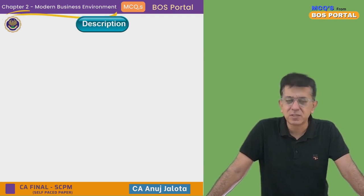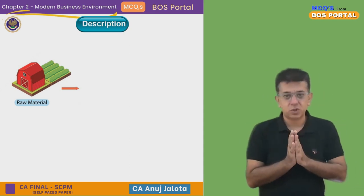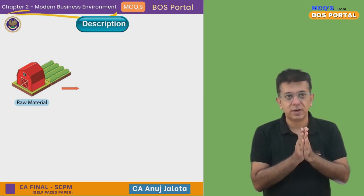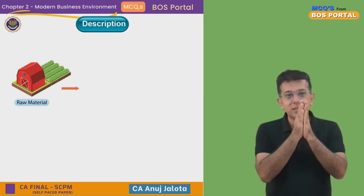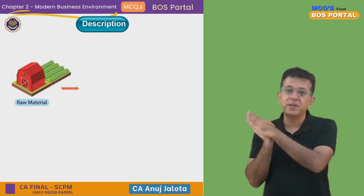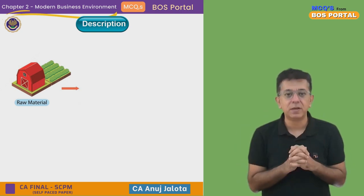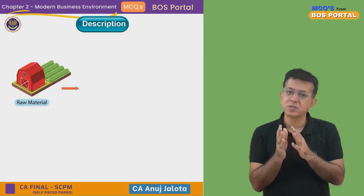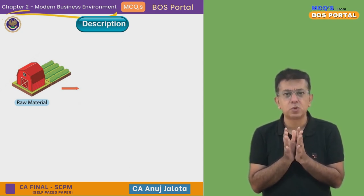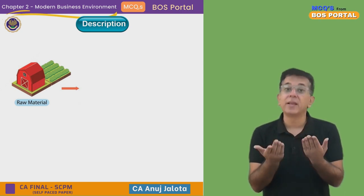Now, what do we mean by supply chain management? Supply chain management is basically that we are an organization, we purchase from our suppliers, and ultimately this material has to be converted into finished goods and distributed to the final customer. All the processes in the middle are going to be part of your supply chain. Supply chains have to be very robust — they should not break down just because something happened.